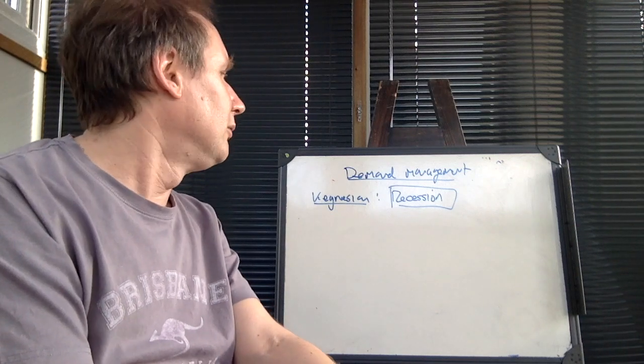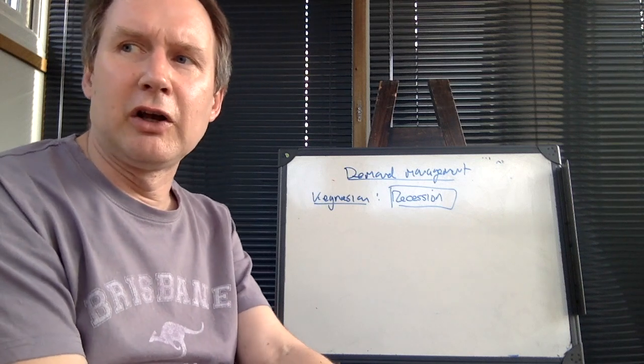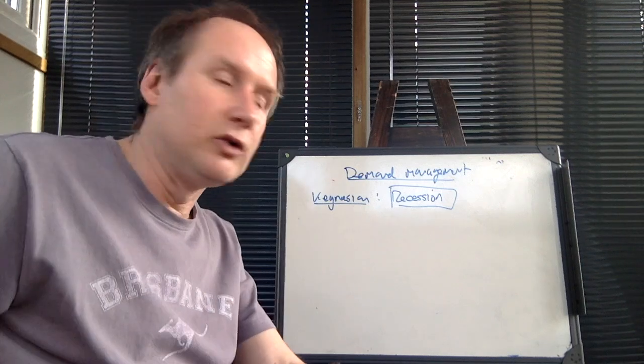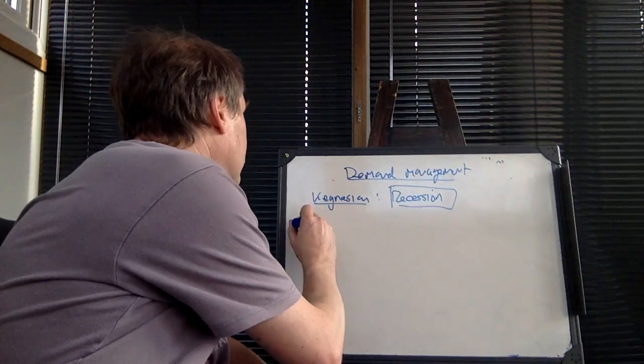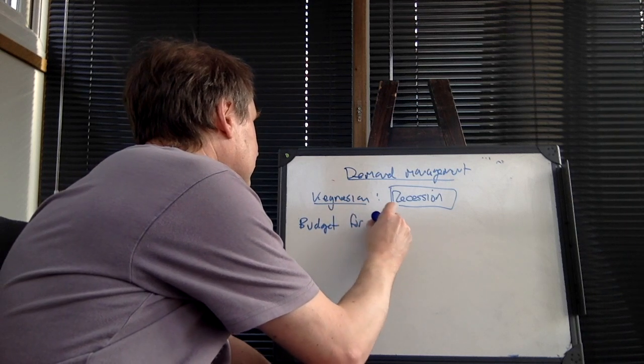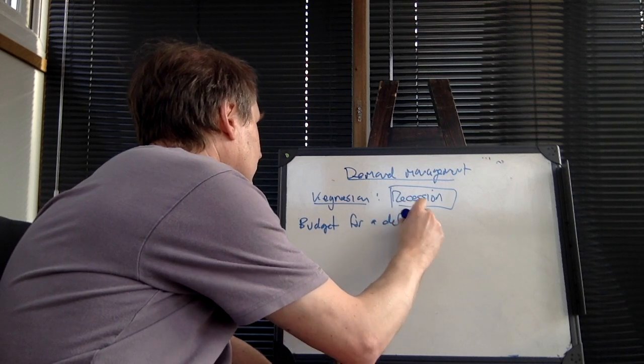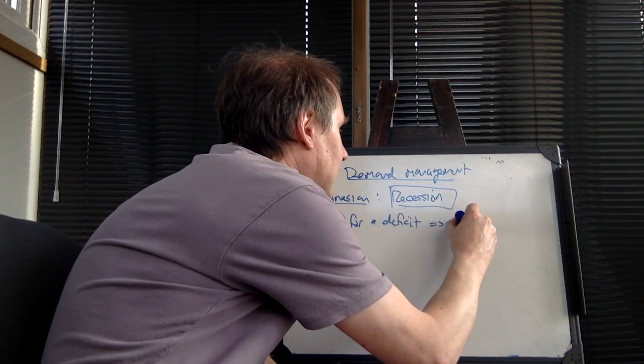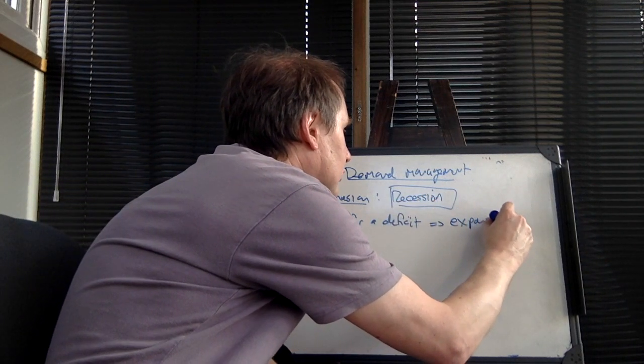So what you might do is you might decide that what you're going to do is that you're going to increase government spending or cut taxes. You could budget for a deficit. And that is known as expansionary fiscal policy.